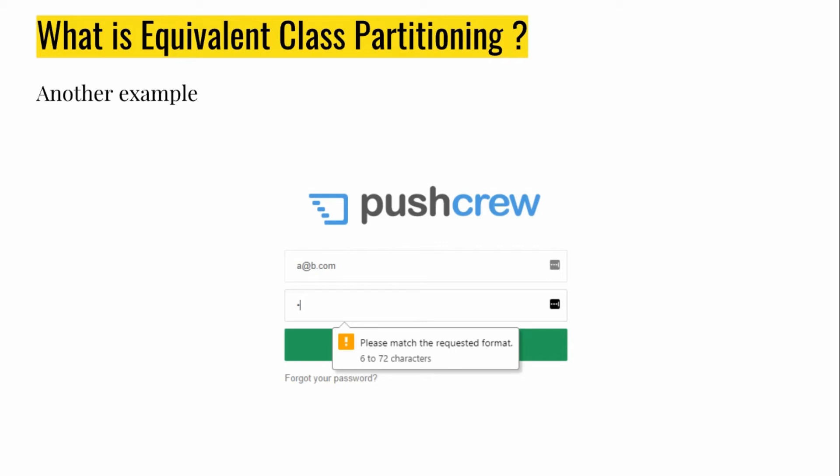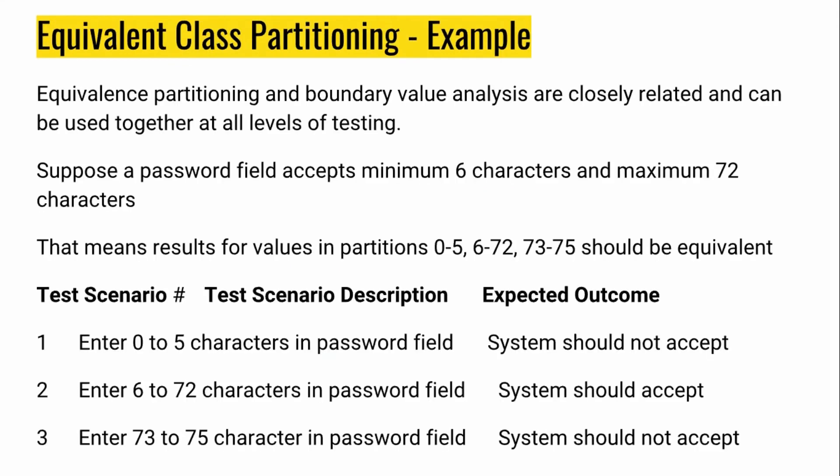Similarly, let's take an example of this login page. The password should be between 6 to 72 characters. Applying equivalence class partitioning: Partition 1 contains 0 to 5 characters, which is an invalid case. Partition 2 contains 6 to 72 characters, which is a valid partition. Partition 3 includes 73 and above, which is an invalid partition. With these three partition test cases we can achieve 100% coverage for bug-free testing using black box technique.